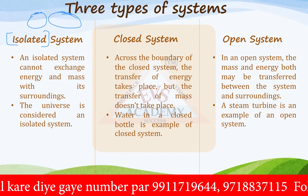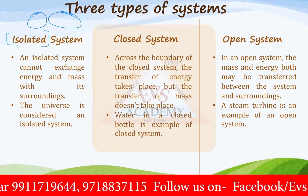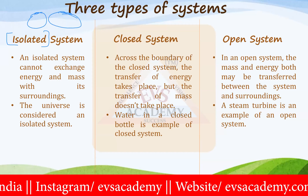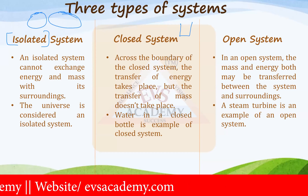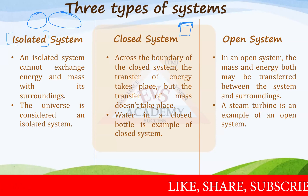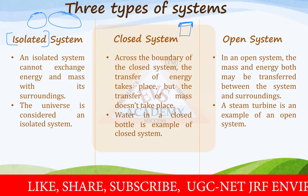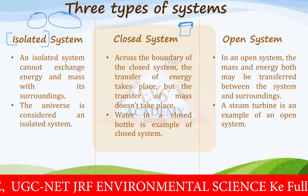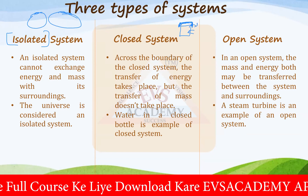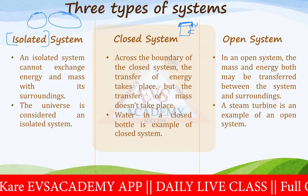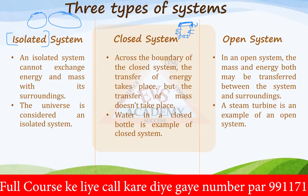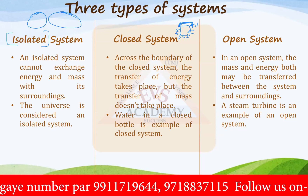Then we have a closed system. Across the boundary of a closed system, the transfer of energy takes place but the transfer of mass does not. For example, imagine a normal steel or plastic container closed with an airtight cap. If you fill boiling water into this container, the water cannot come out and no water can be added — exchange of matter is not taking place.